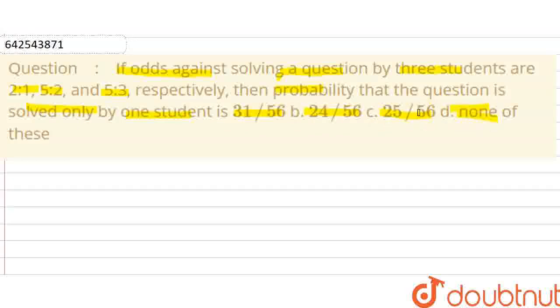Let us solve this question now. The odds against solving a question by three students - let the three students be A, B, and C. If the odds against by three students is given as 2 is to 1, then the odds in favor of solving a question by student A is 1 by 3.